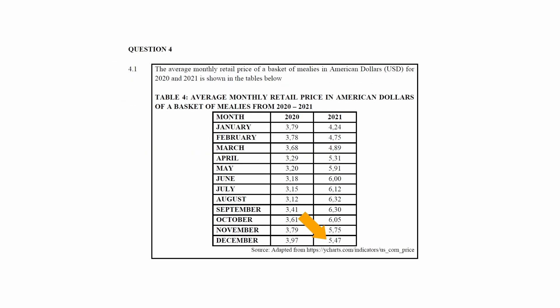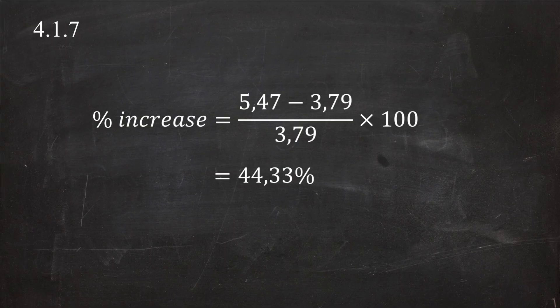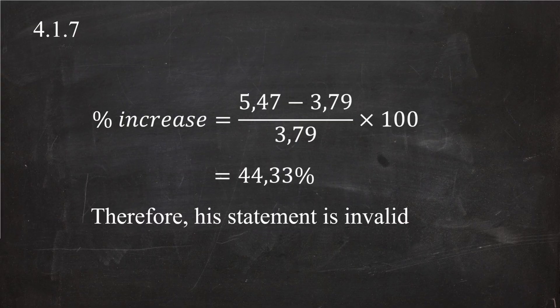From the table, the retail price in December 2021 was $5.47 and in January 2020 was $3.79. Substituting into the formula: percentage increase = (5.47 − 3.79) / 3.79 × 100 = 44.33%. Since this is not equal to the farmer's stated 42%, his statement is invalid.